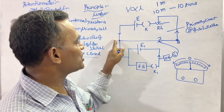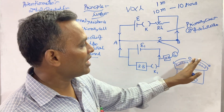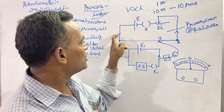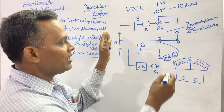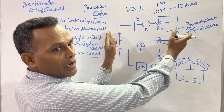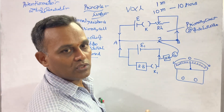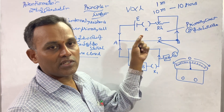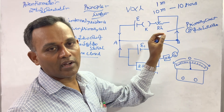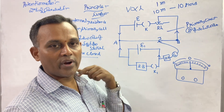When the jockey is pressed at the ends A and B, the galvanometer shows opposite deflections. This confirms the circuit connections are correct.